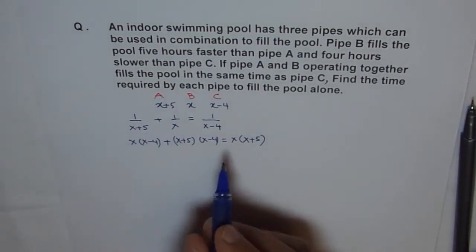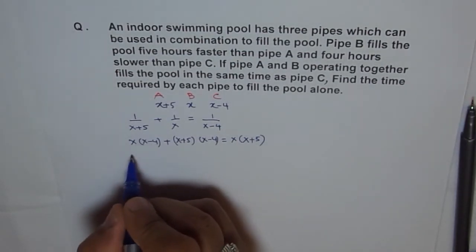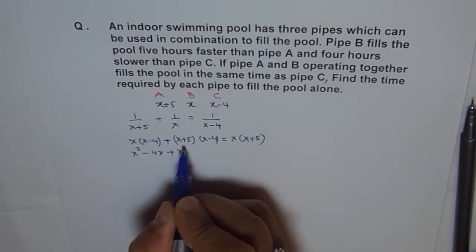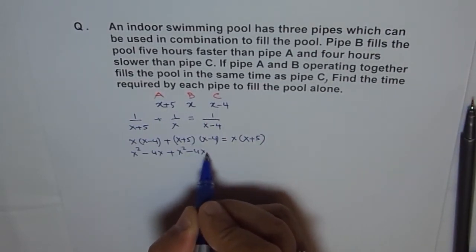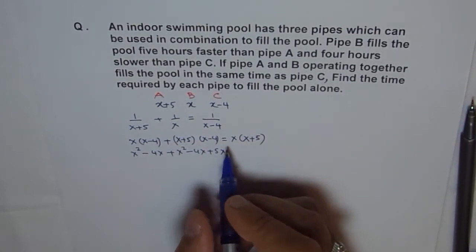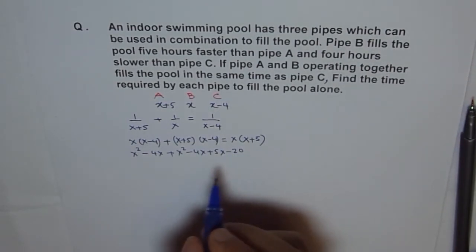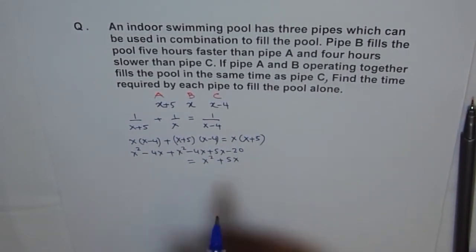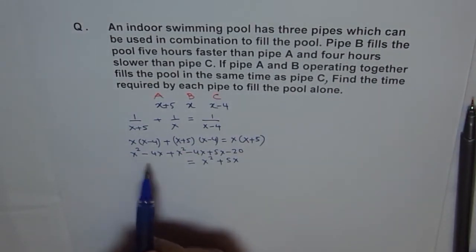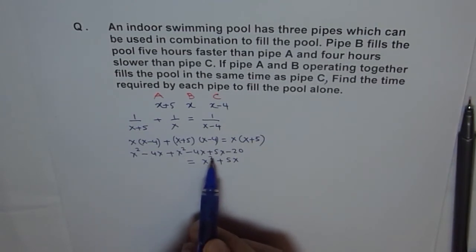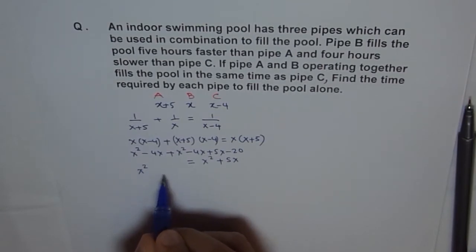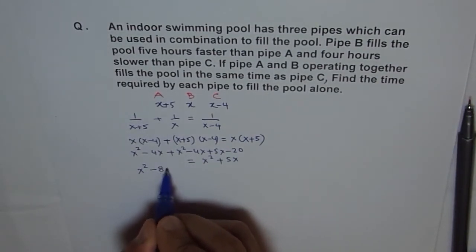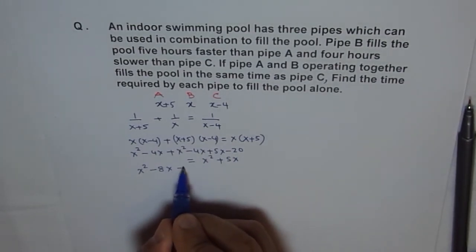Now expand and simplify. Expanding the left side gives X squared minus four X, plus X squared plus five X minus four X minus twenty, which equals X squared plus five X on the right. Bringing all terms to one side: the two X squared terms and the five X terms cancel, leaving X squared minus eight X minus twenty equals zero.